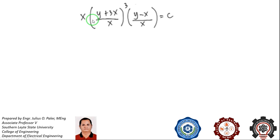We simplify. So you have x times (y + 3x)/x cubed times (y - x)/x equal to c. Now x³ and x cancel with x. So what remains is (y - x). You no longer have over x because it is already cancelled. And raising both numerator and denominator by 3 gives us (y + 3x)³/x³.